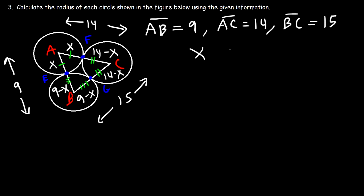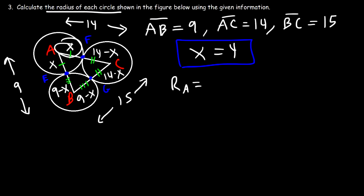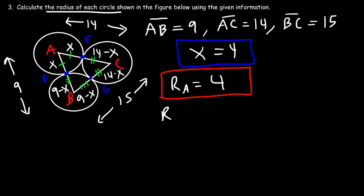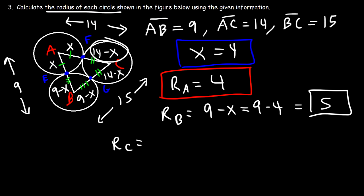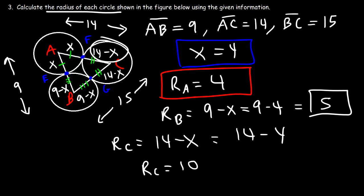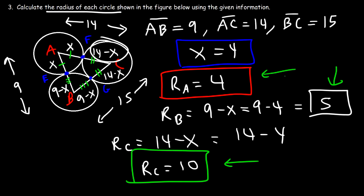With X equal to 4, we can now find the radius of each circle. The radius of circle A equals X equals 4. The radius of circle B equals 9 minus X equals 9 minus 4 equals 5. The radius of circle C equals 14 minus X equals 14 minus 4 equals 10. So the three radii are: circle A is 4, circle B is 5, and circle C is 10. Thanks for watching — I hope you found it helpful.